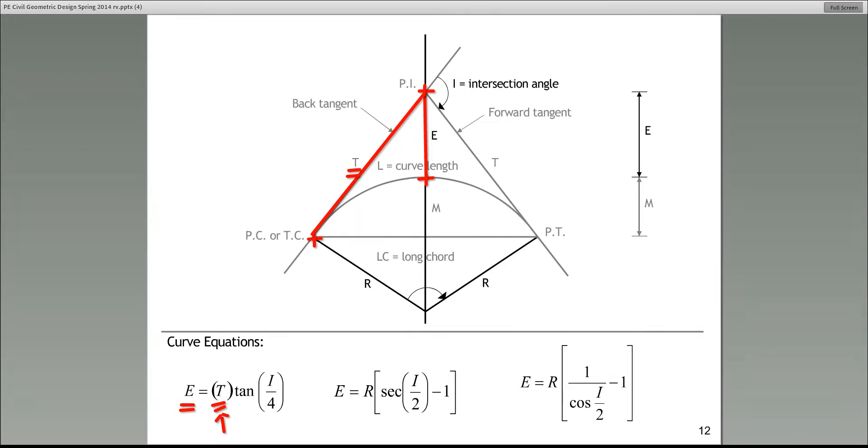Let's assume that they ask you to find the external tangent for a given curve. If you know the tangent distance, capital T, and if you know the intersection angle I, then you can substitute it in here and find the external angle. I said the external angle, which I made a mistake. It's external distance. There are two other equations on this page, and you can choose any of these three equations based on what the known values are to find the external distance. I have some example problems that will demonstrate this to us in a few slides.